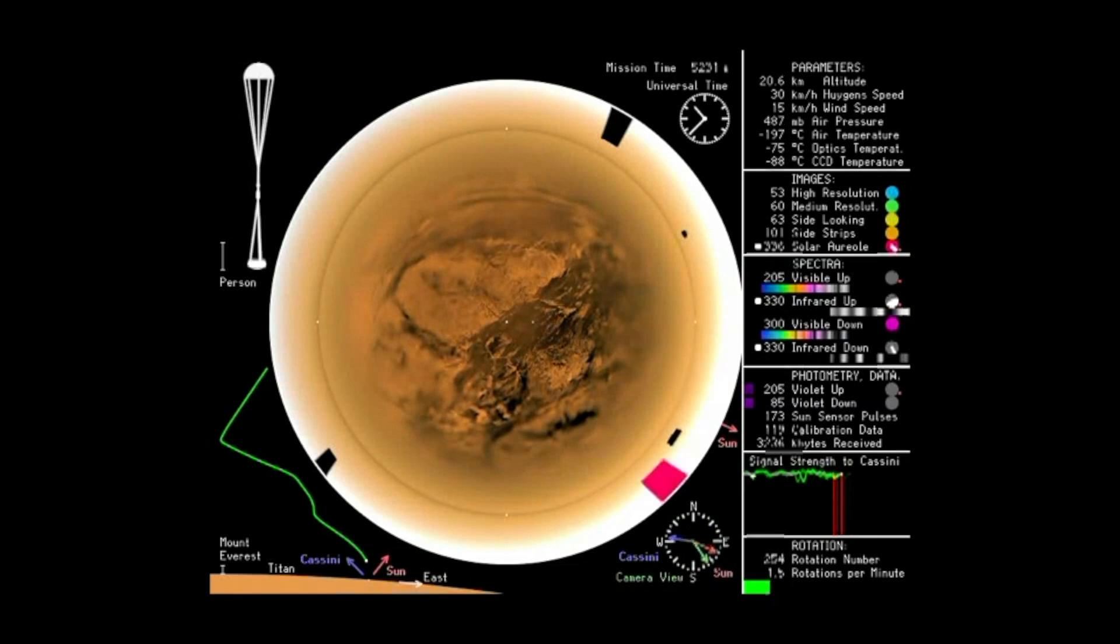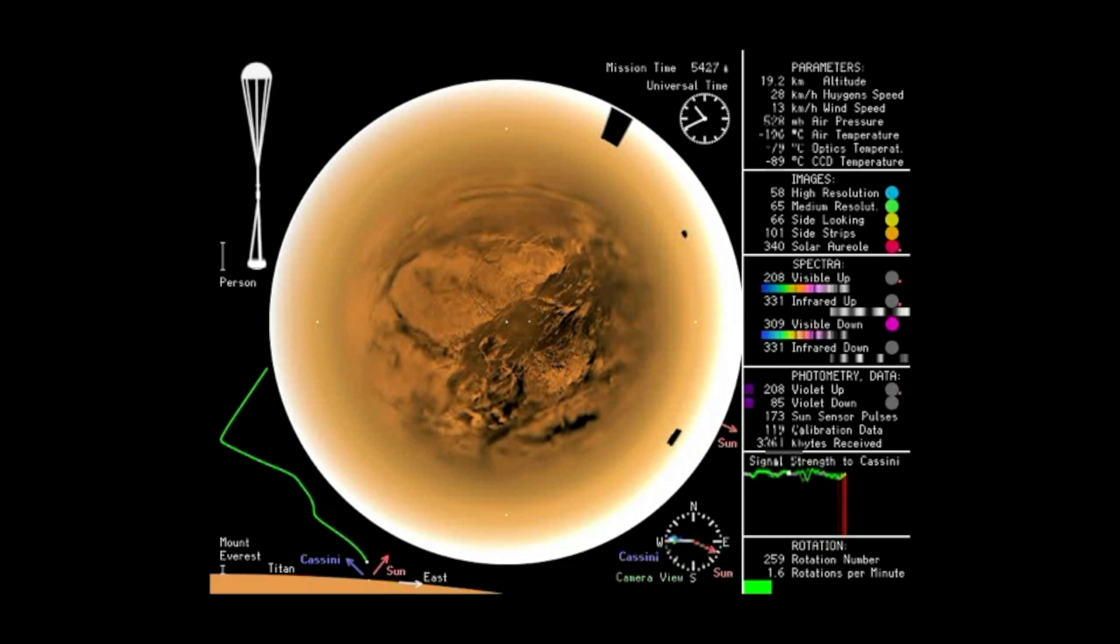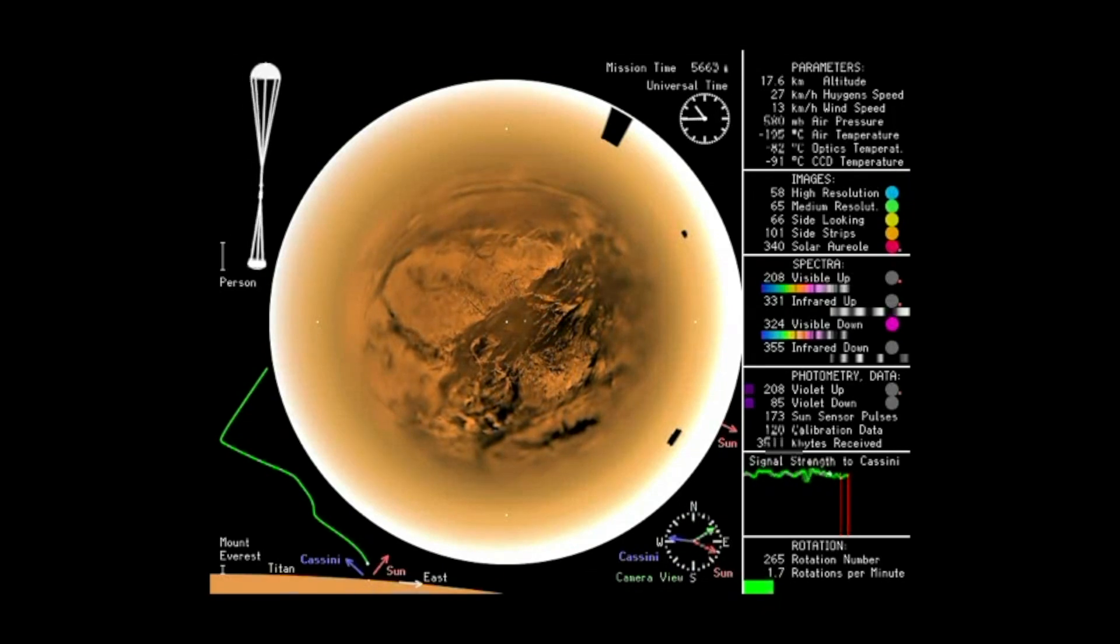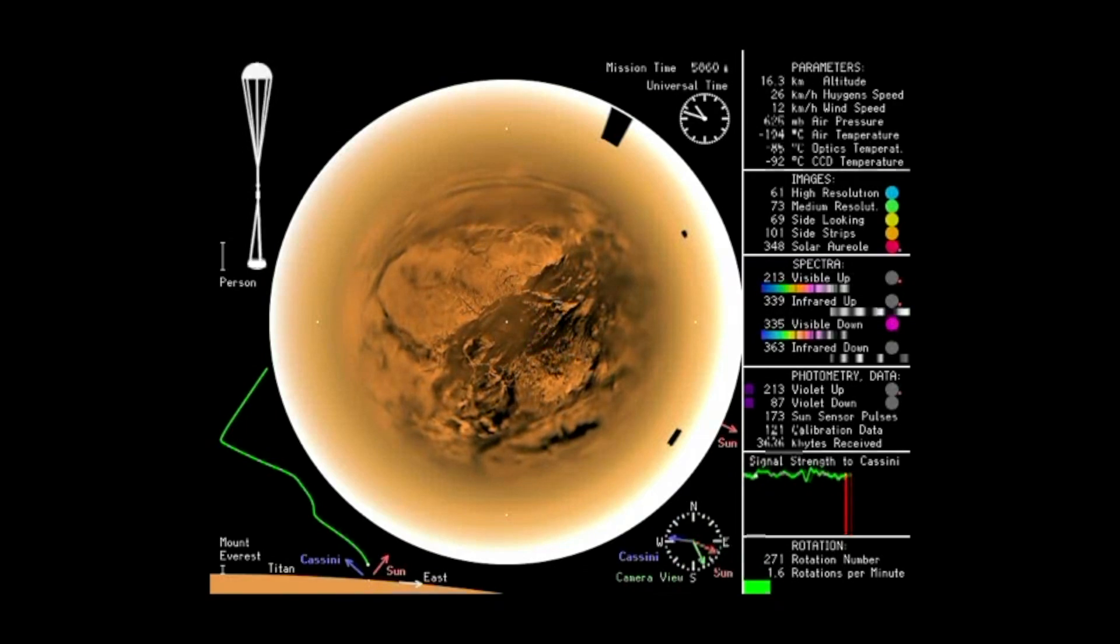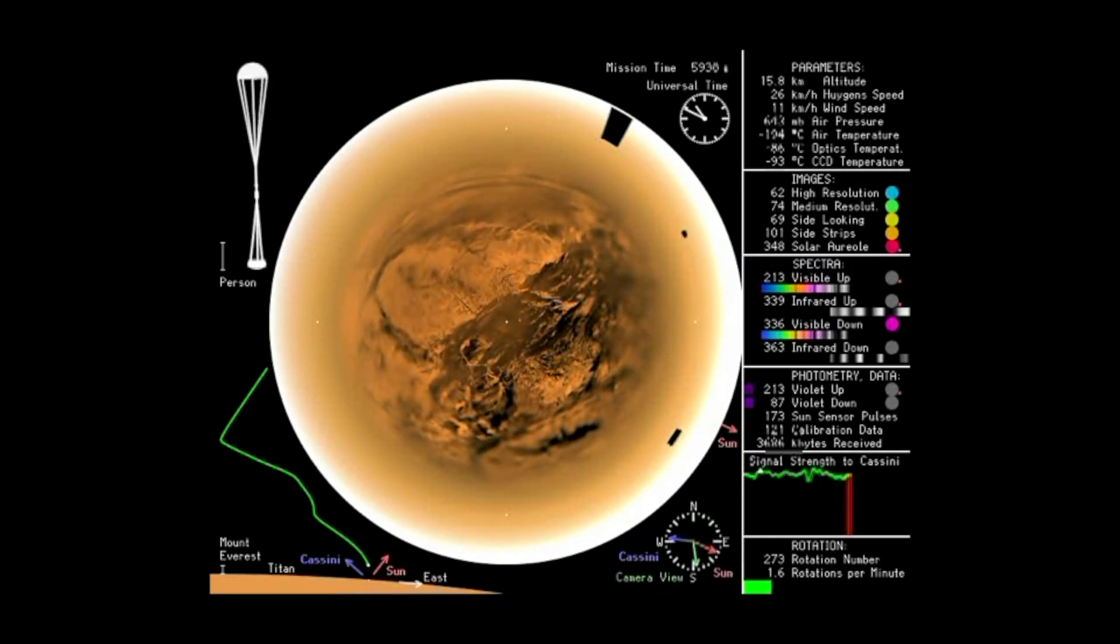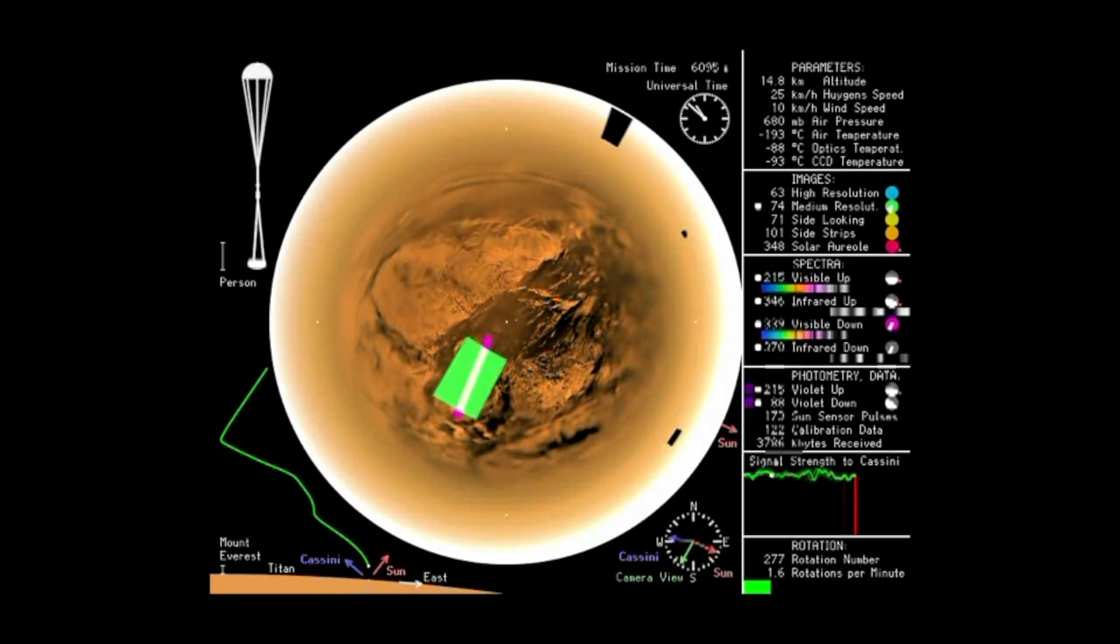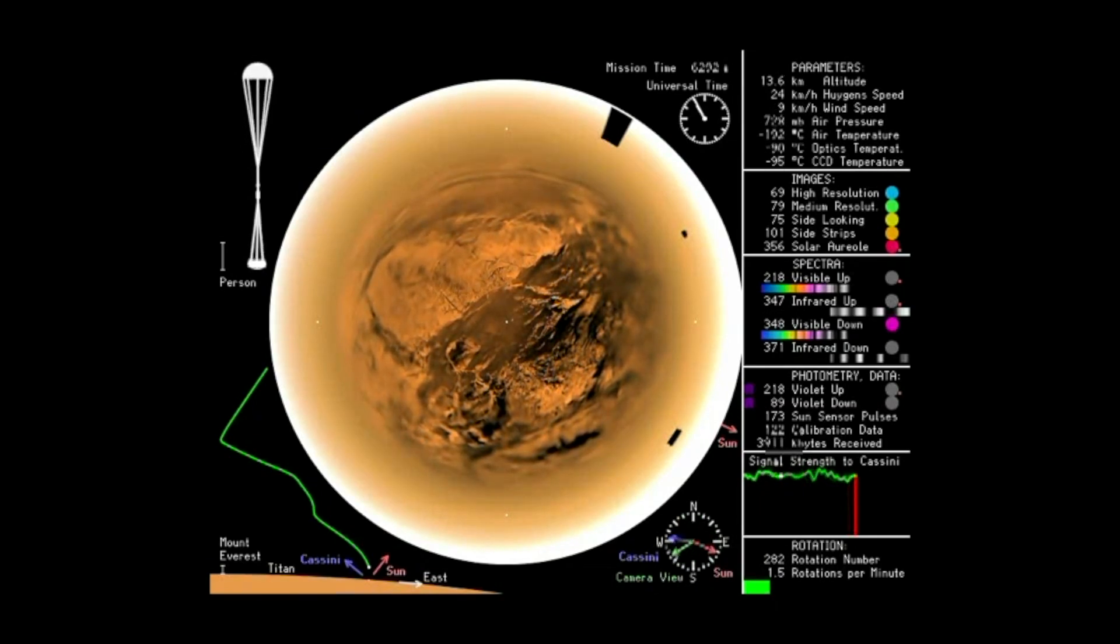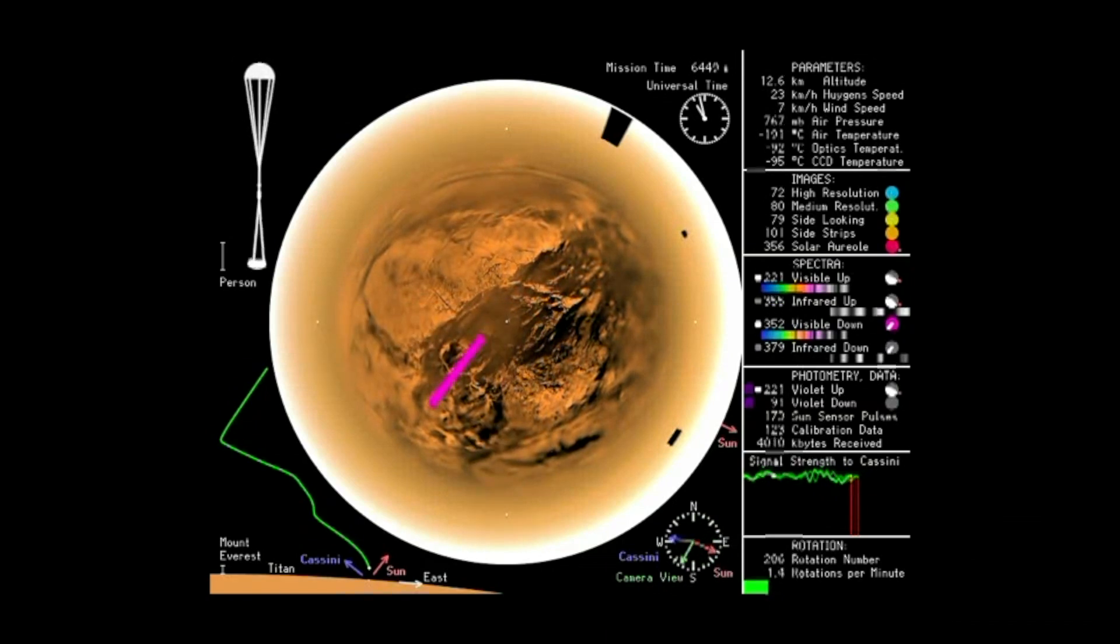We have a mission to go back to Titan, it's called Dragonfly. It's going to be an octocopter actually that will fly through the atmosphere of Titan and land at various places. It's not targeted to go close to the seas that are at the north polar region of Titan, but it's going to be taking samples—sort of vacuuming up samples of the surface, taking it into the spacecraft and making measurements of that. It'll be a very interesting mission.